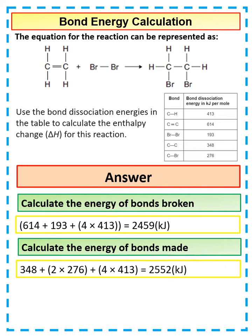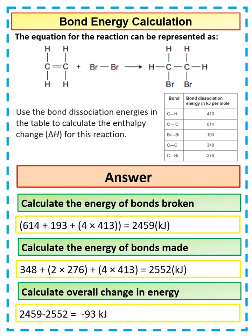Then to work out the energy change, all we're doing is the energy of the bonds being broken minus the energy of the bonds being made. Which gives us an energy change of negative 93 kJ.